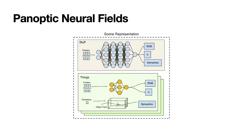In our model, stuff is represented by a MLP that produces color, density, and semantic field. Each object instance is represented by an oriented bounding box track and an instance-level object MLP.